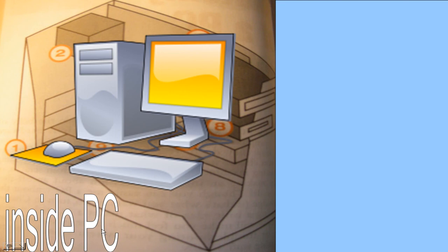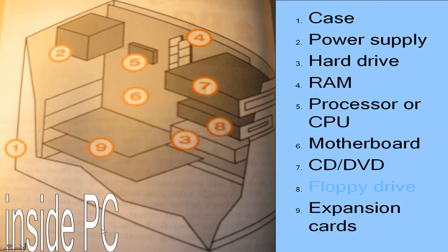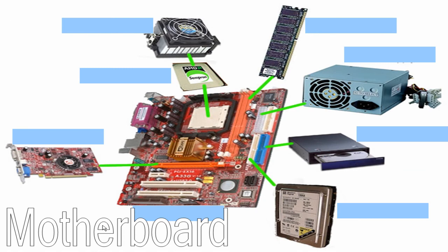We're looking inside the PC. And it's those things. Power supply. Hard drive. Random access memory. Processor or central processing unit. Motherboard. CD. DVD. Expansion cards. All of those that we're interested in. There they are again.